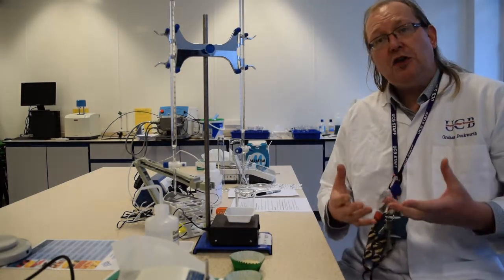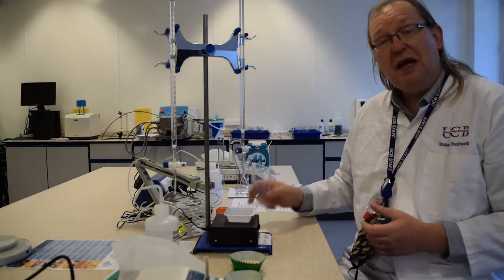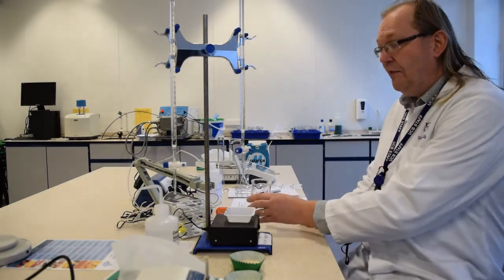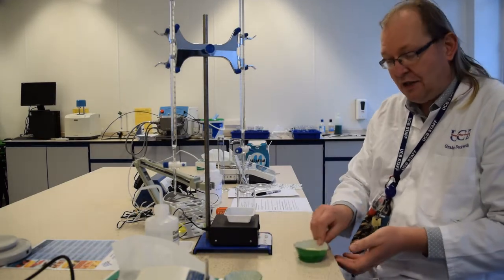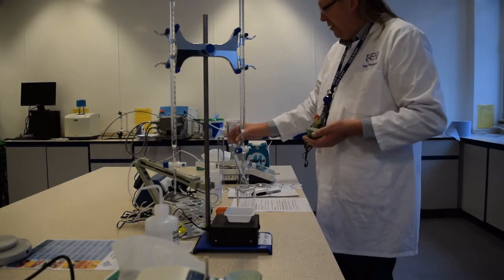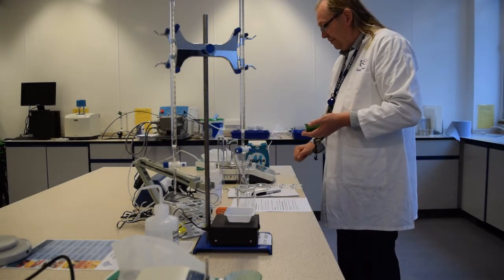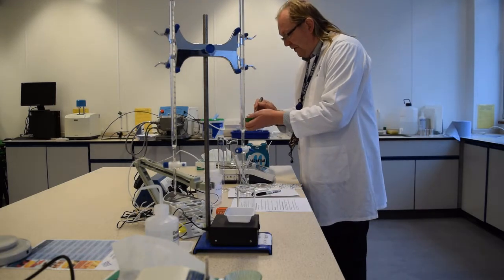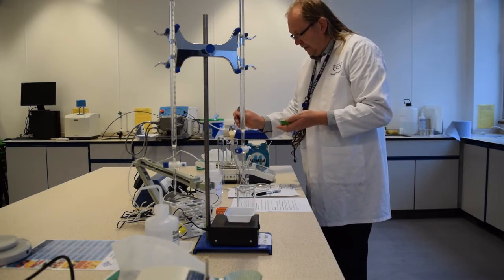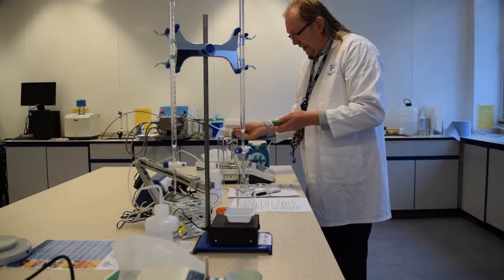So the first part of the process is to measure out our samples. We need 15 grams of sample in order to do this test. So we simply set our little glass beaker onto scales, tare it, and then we need 15 grams of our sample nicely measured into our beaker.